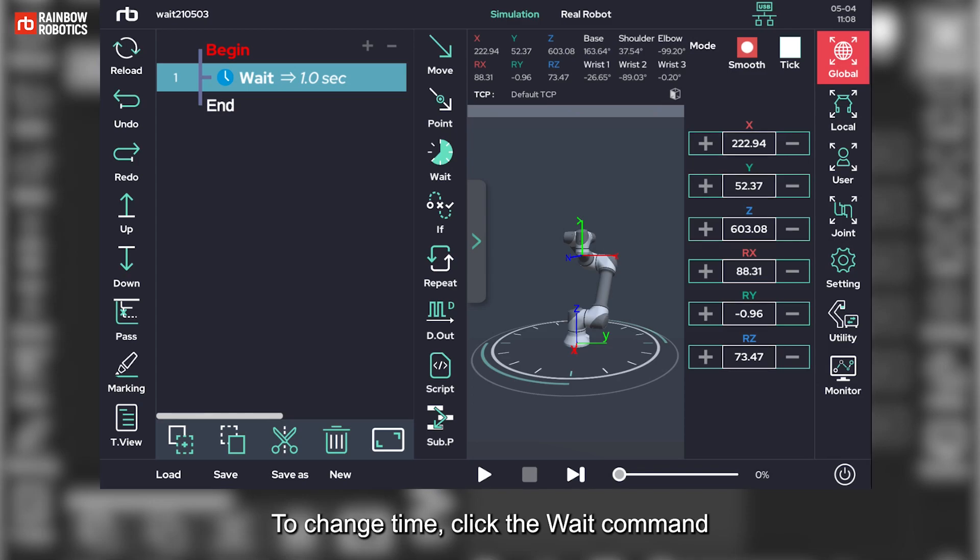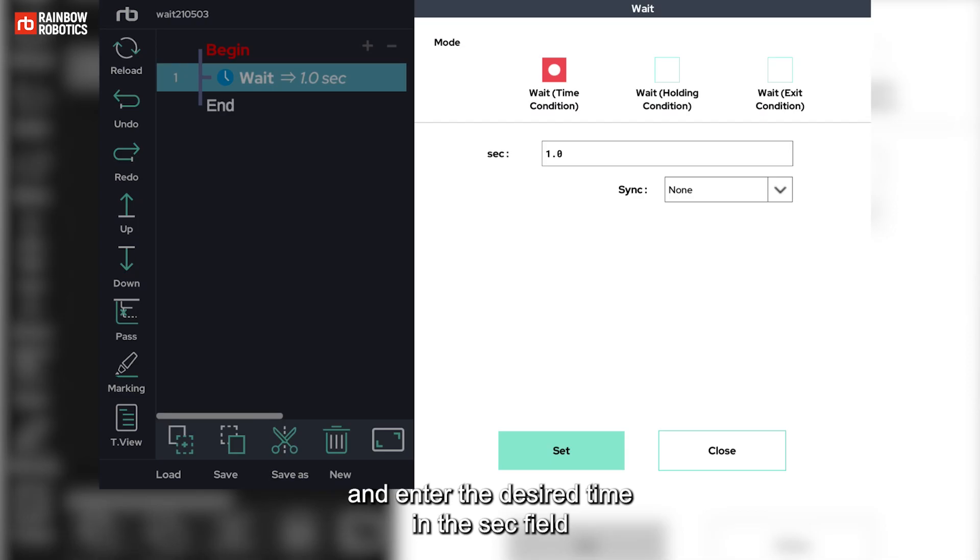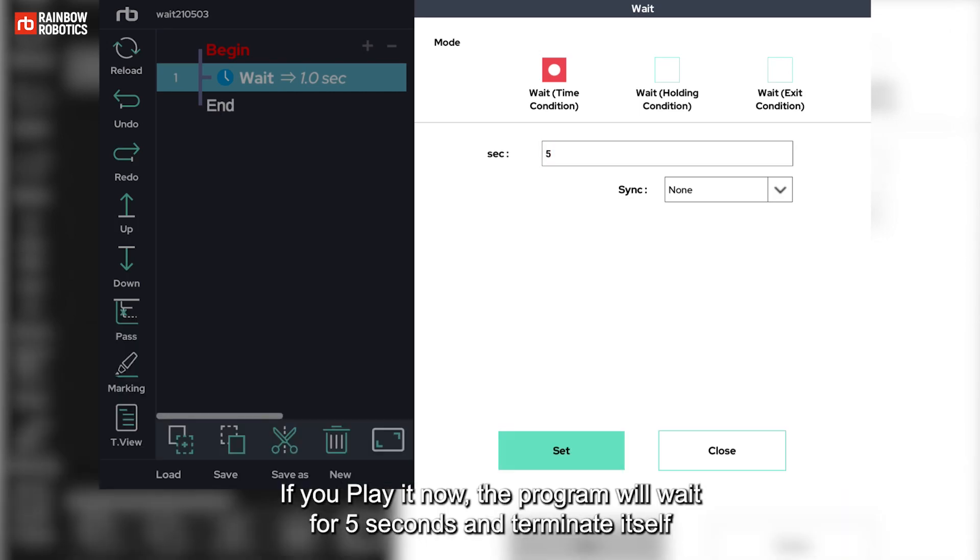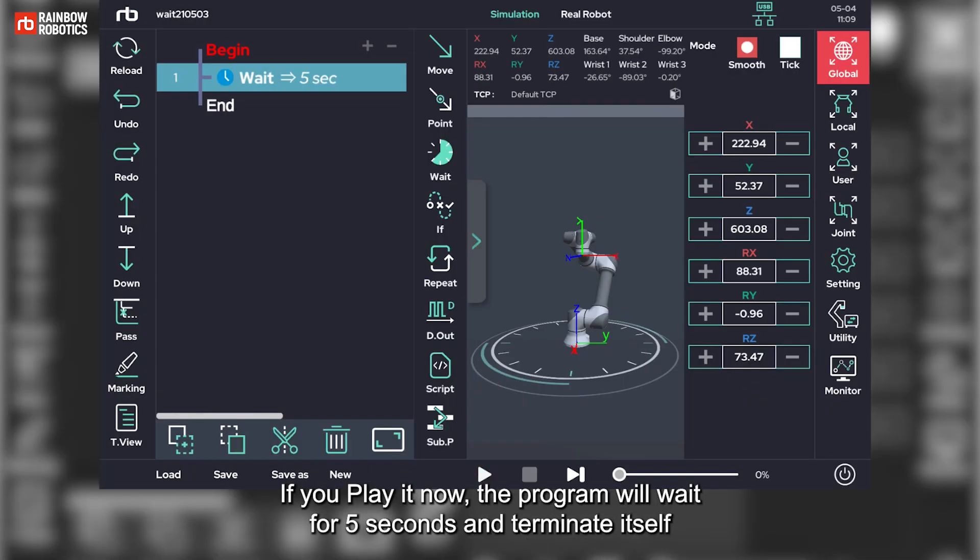To change time, click the wait command and enter the desired time in the sec field. For example, let's enter 5 seconds and press set. If you play it now, the program will wait for 5 seconds and terminate itself.